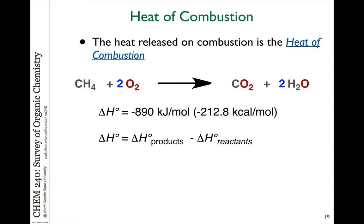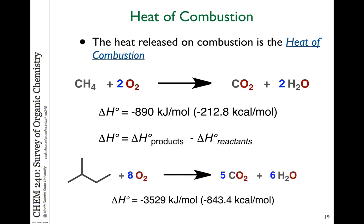We can actually use the heat of combustion, measured by burning a hydrocarbon completely, to compare molecules with each other. Take a look at methane versus 2-methylbutane: 2-methylbutane has more C-C and C-H bonds, consumes more oxygen when it combusts fully, and produces 5 moles of CO₂ and 6 moles of water. The energy released is much greater — about 3,500 kilojoules per mole compared to methane — because there are more C-C and C-H bonds being broken and releasing their energy. That's comparing CH₄ versus C₅H₁₂.